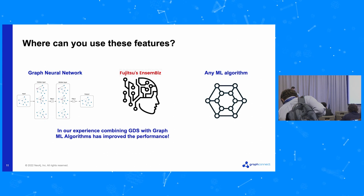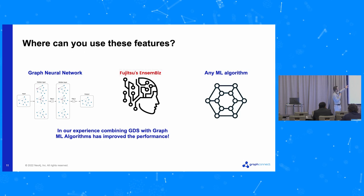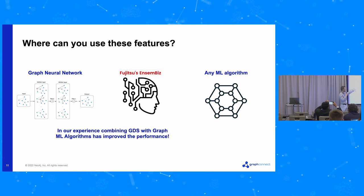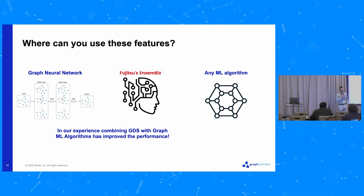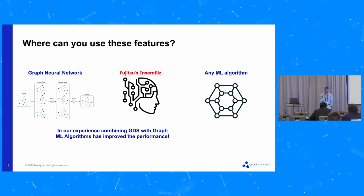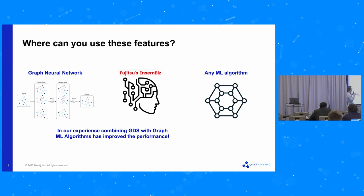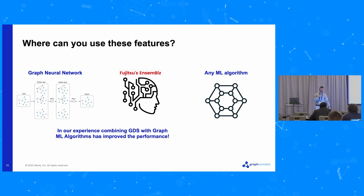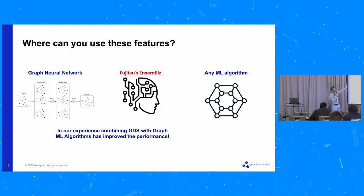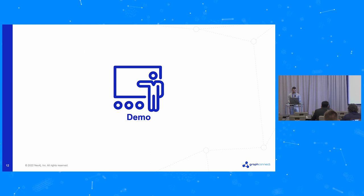Where can you use these features? In graph neural networks — we will see how to load features created with Neo4j into a graph neural network using Feast. We also use SamBit's Deep Tensor, a graph neural network developed with Fujitsu, and in general any machine learning algorithm. In our experience, combining graph data science algorithms with subject matter expert features created using graph rules can really improve the performances achievable with graph neural networks and machine learning algorithms.